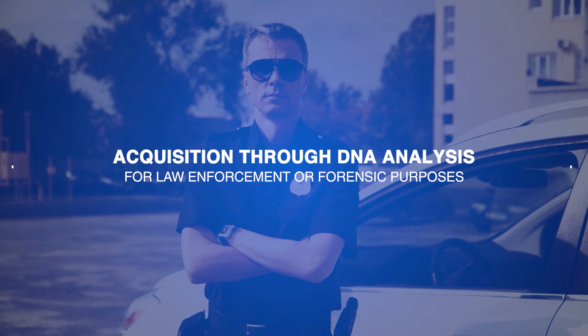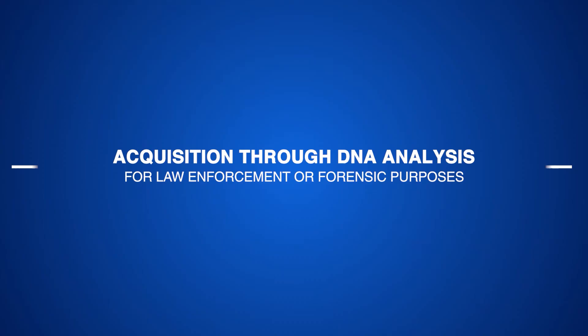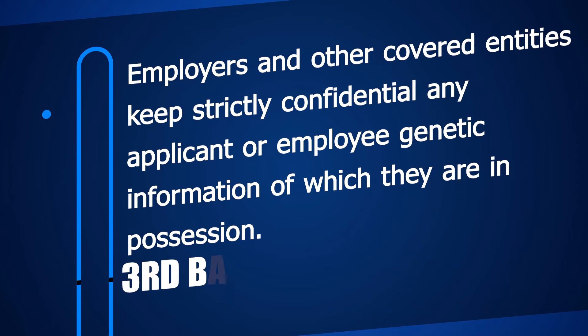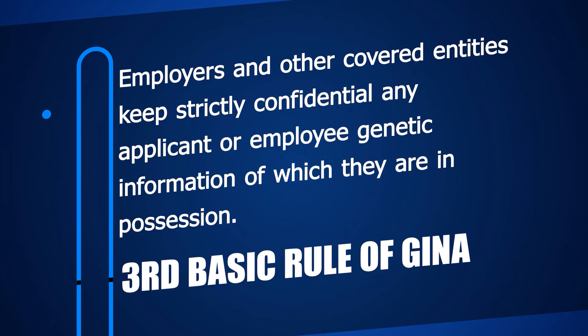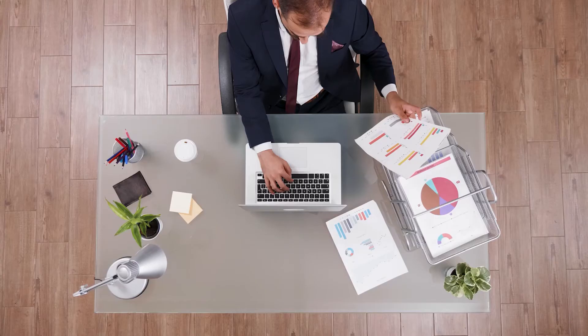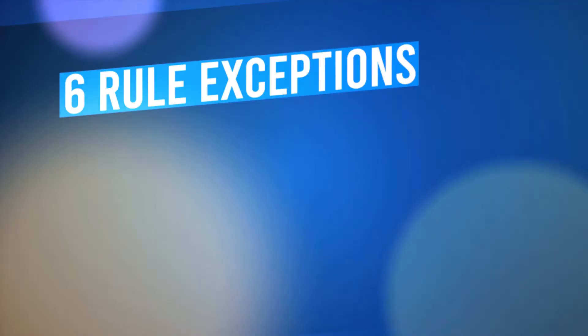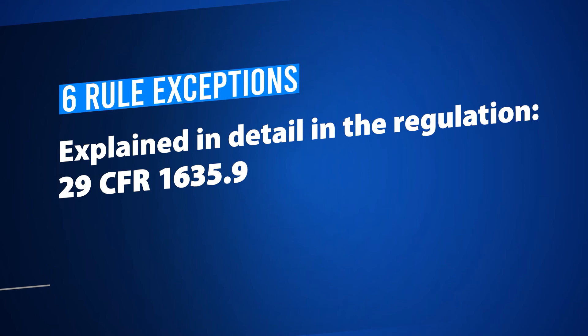The third basic rule of GINA is that employers and other covered entities must keep strictly confidential any applicant or employee genetic information of which they are in possession. This means they must keep genetic information in medical files that are separate from personnel files. There are six narrow exceptions to this rule, which are explained in detail in the regulation at 29 CFR 1635.9.